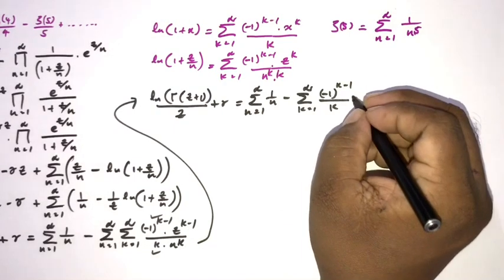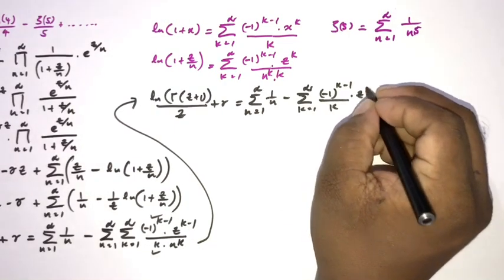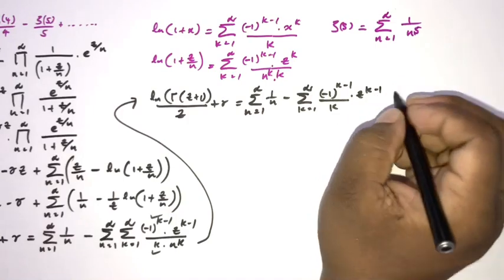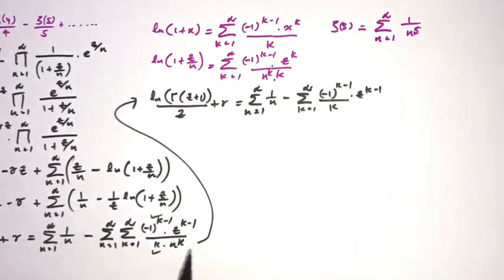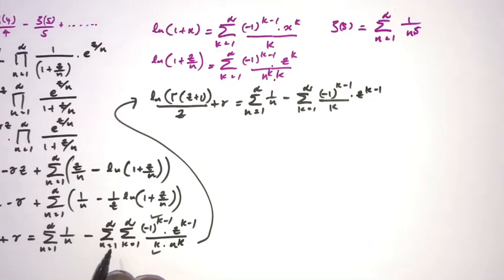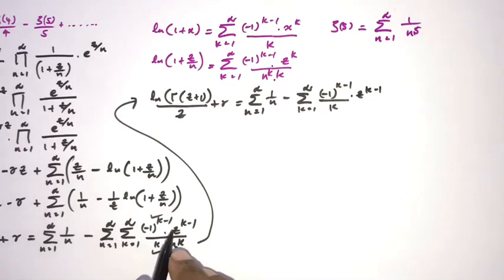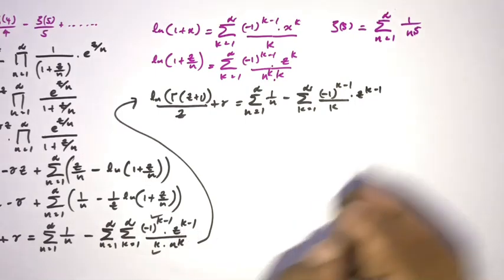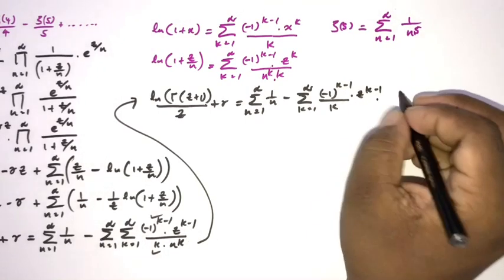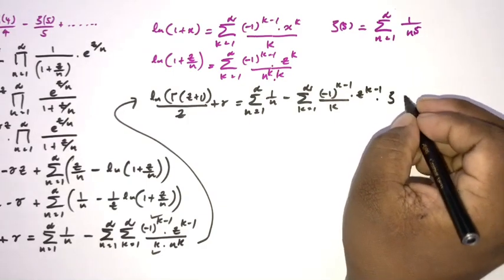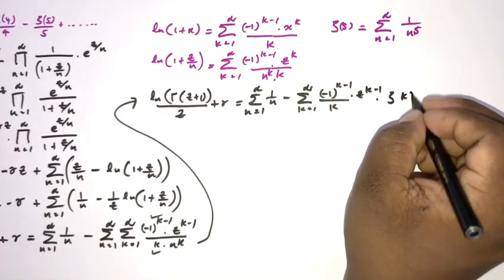Here we have C^(k−1), and we know the sum from n=1 to infinity of 1/n^k is equal to ζ(k).